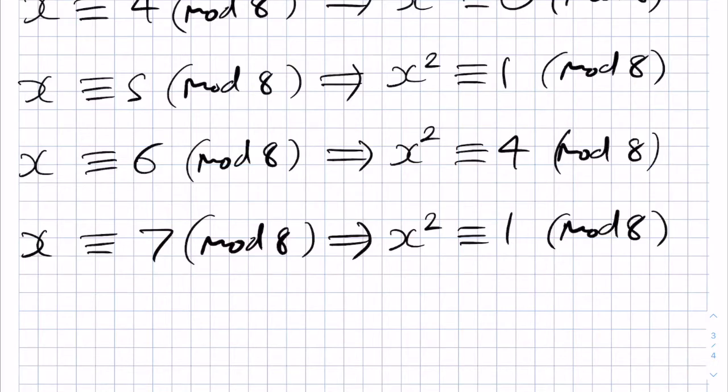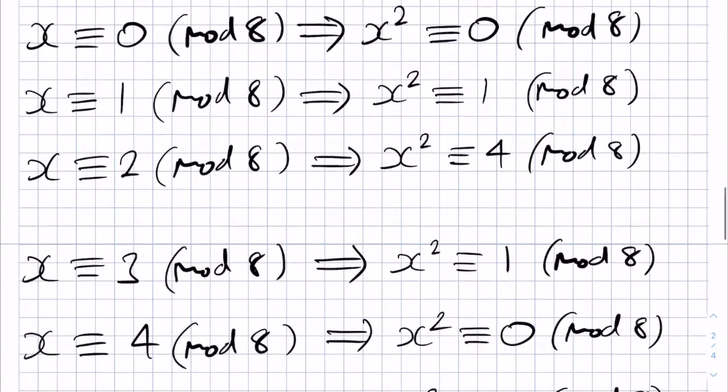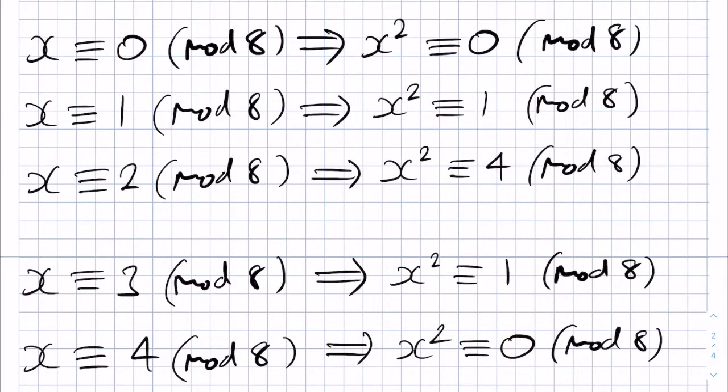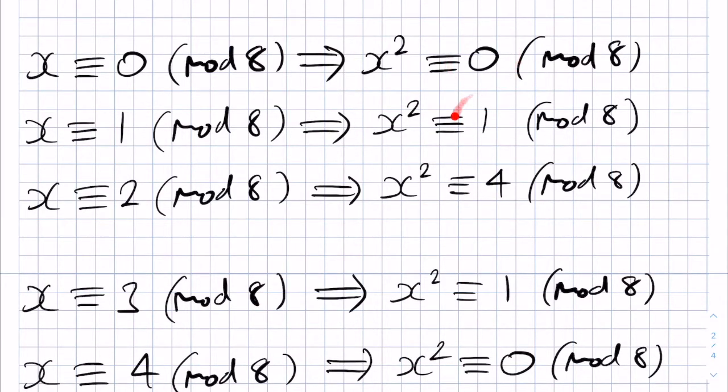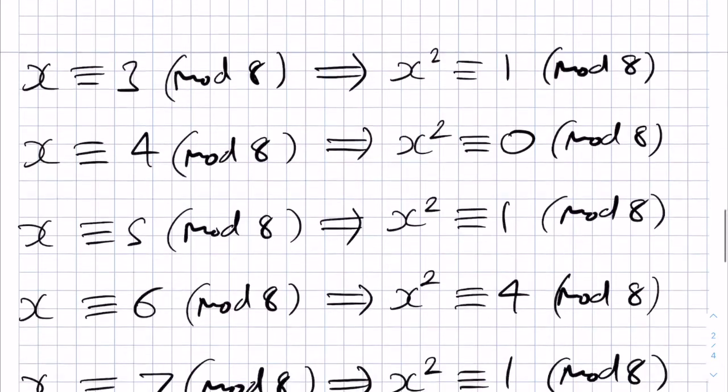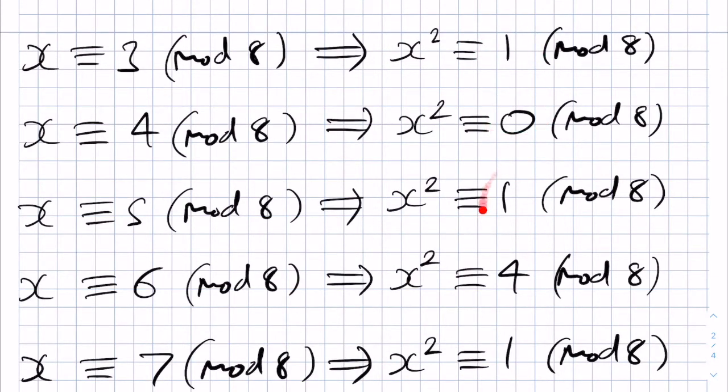These results that we have here is the nice thing about using modulo 8 when we square. We only have 3 possible values when we square an integer in modulo 8. We only get 0, 1, or 4 throughout. So we can only get 0, 1, and 4 when we square in modulo 8. This makes it a good modulo to consider for situations involving squares of integers in general.